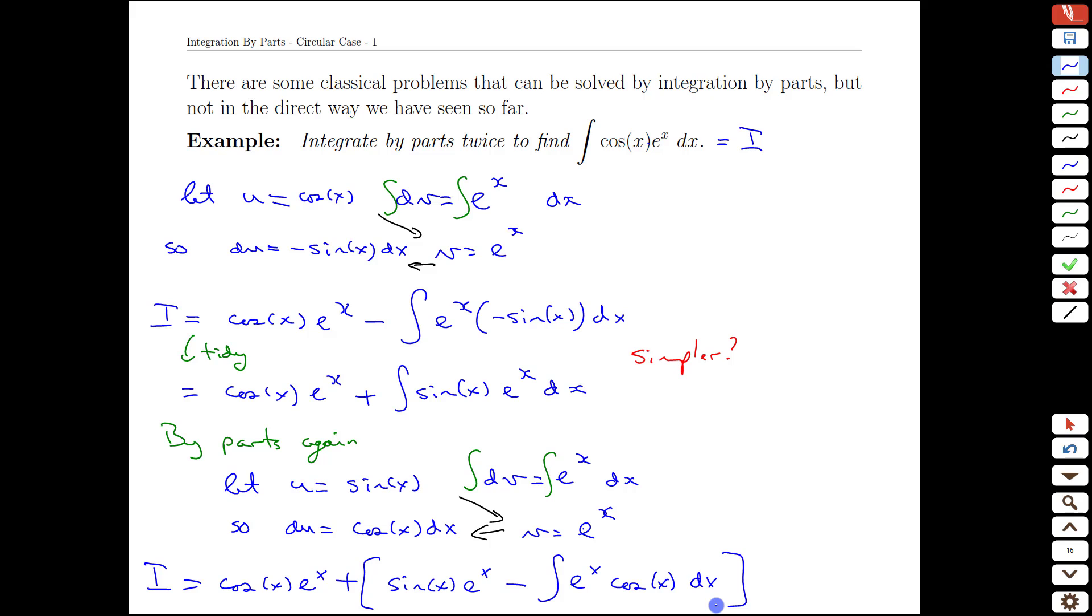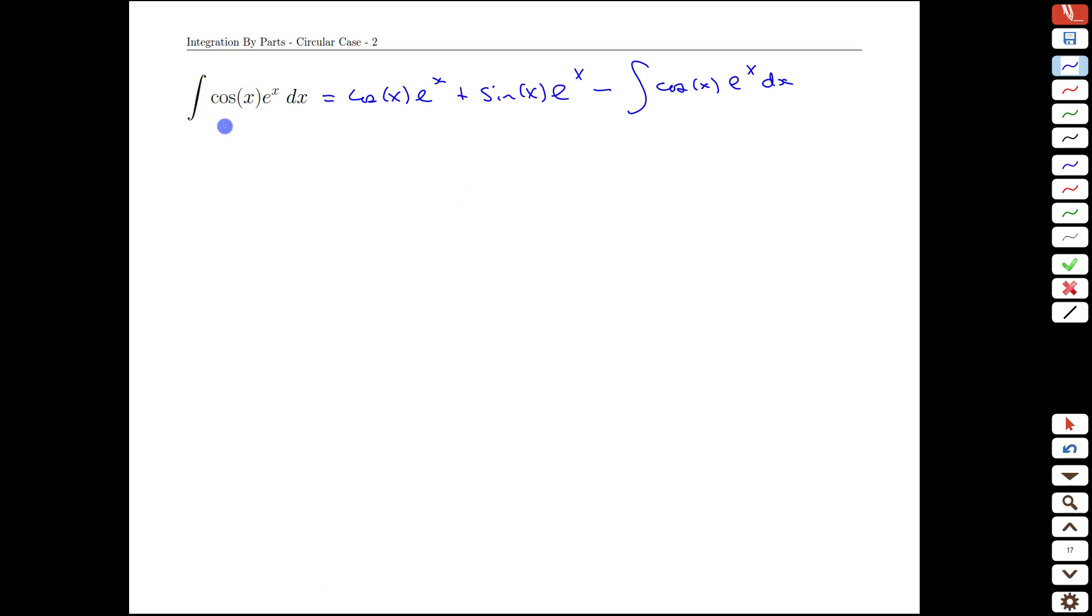Now that does not seem like progress, because we're actually back to where we started. However, let's write this on the next page, and see if there's something we can work with. So what we have is the integral of cos(x) times e^x, can be replaced by these two expressions, minus the integral of cos(x) e^x dx.